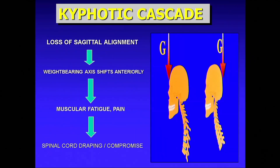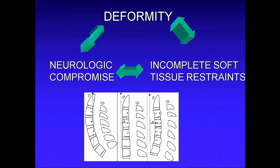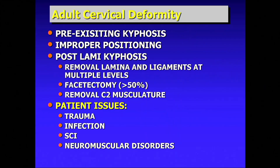I'll argue the biggest creator of deformity are the people in this room — so be careful. It's a cascade: once you do something, gravity continues to put your head down, you lose your posterior muscles, and it's a complete cycle. Particularly if you get neurologic involvement, you lose the innervations that control your neck muscles. Cervical deformity causes include improper positioning and aggressive decompression, which we don't do as much as we used to years ago.